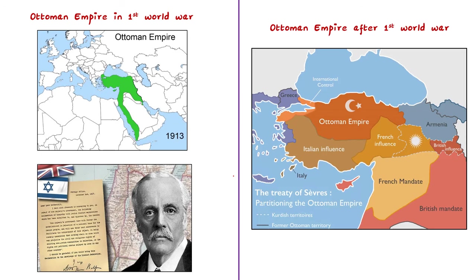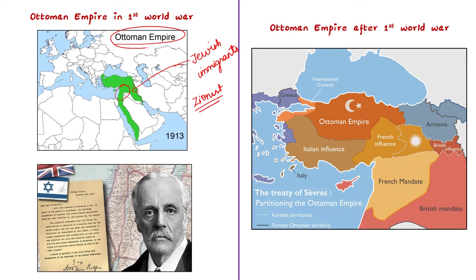Let us see the historical background. In the late 19th century, the region called Palestine was part of the Ottoman Empire. During this time, Jewish immigrants driven by various factors including religious and political motivations began to settle in the Palestine region. This is the beginning of the Zionist movement, which aimed to establish a Jewish homeland in Palestine. For more than 2000 years, Palestine had been occupied and resided by Palestinian Arabs.